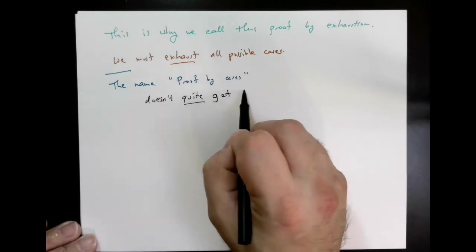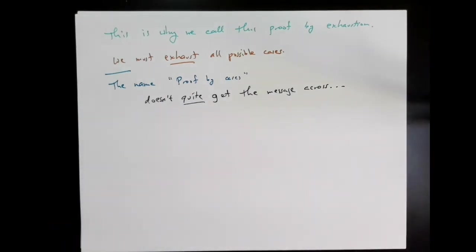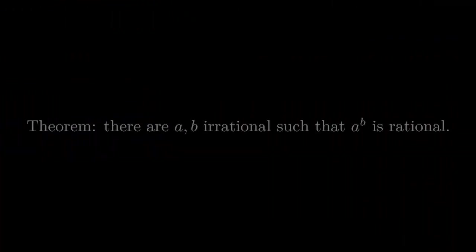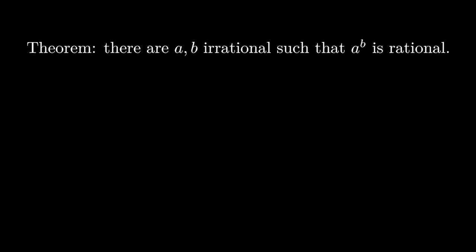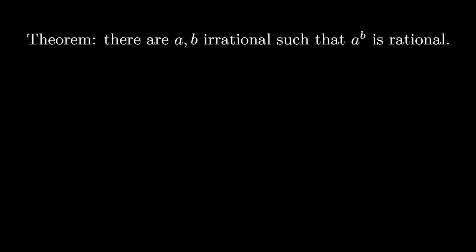Okay and finally one last example is what's sometimes called a non-constructive proof. This is a case somewhat vaguely where we show that something has to happen that we want to happen, but we can't pin down exactly where it happens. But that's okay because we show it happens somewhere. Okay so let me explain by an example. This is a bit vague but it's a common idea.